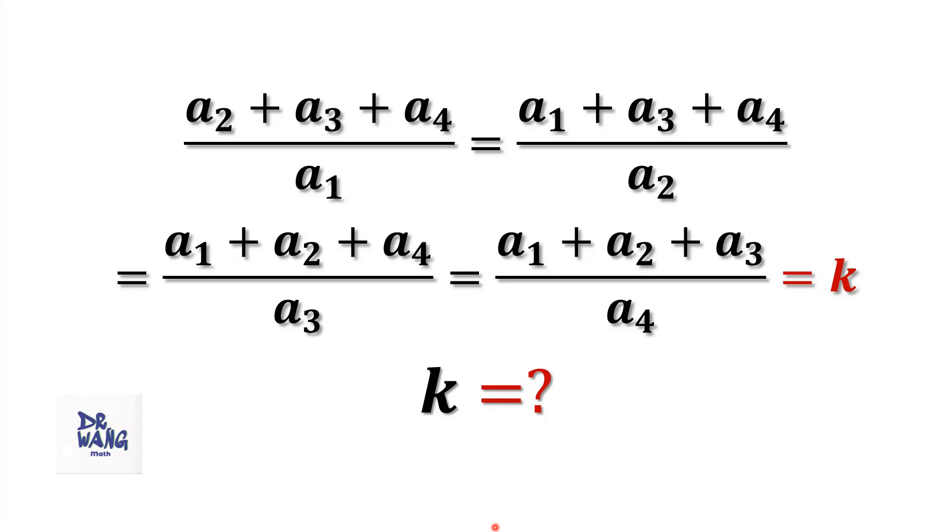Here is the question. We have four numbers, A1, A2, A3, A4. If A2 plus A3 plus A4 over A1 equals A1 plus A3 plus A4 over A2 equals A1 plus A2 plus A4 over A3 equals A1 plus A2 plus A3 over A4 equals K, we want to find out what is the value of K.